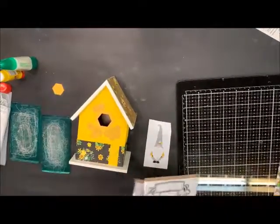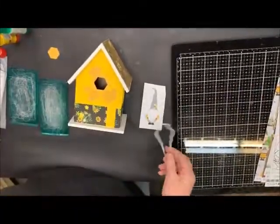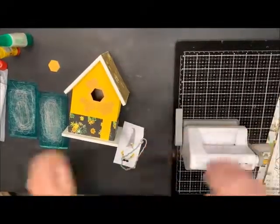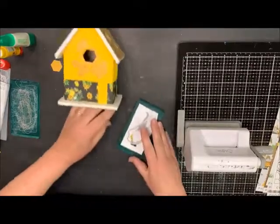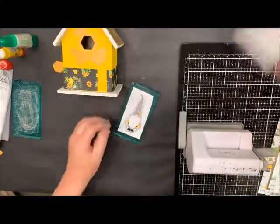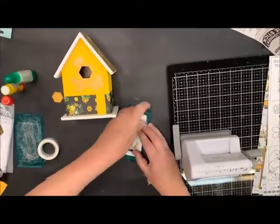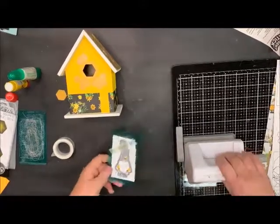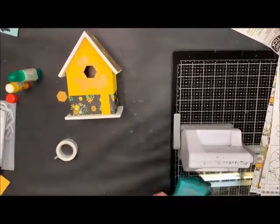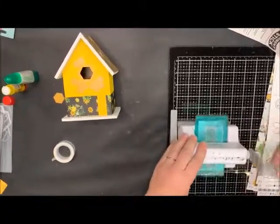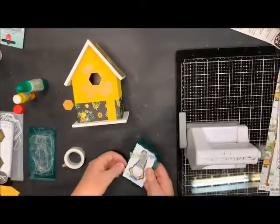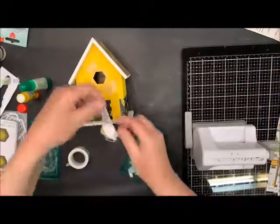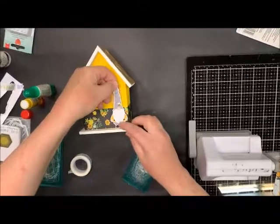This takes the die that goes with the stamp set. I'm just going to use this die to cut him out. I'm just going to get a little washi tape here. And there we go, there he is. So he's my embellishment and he's going to cover up that space right there.